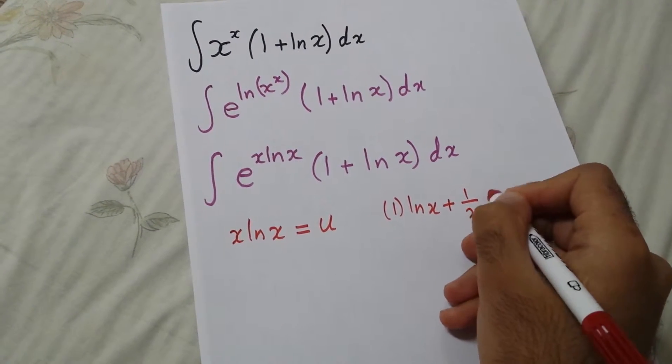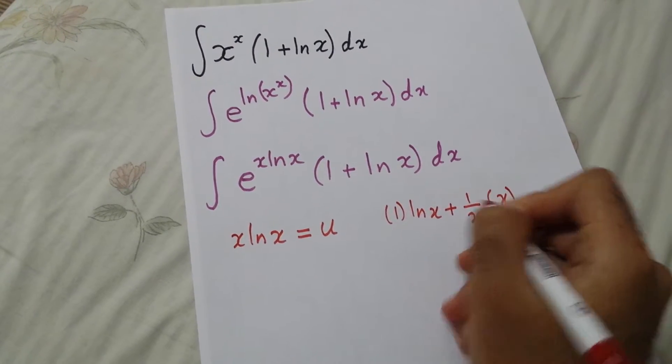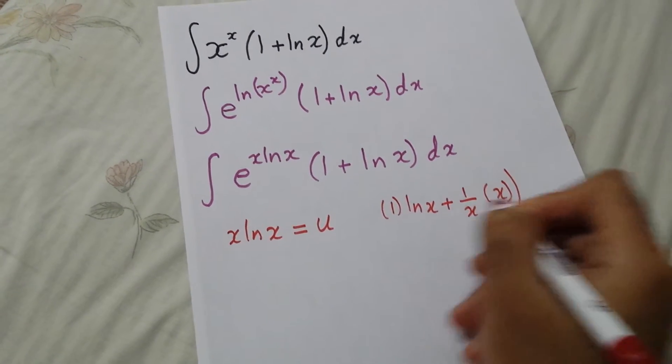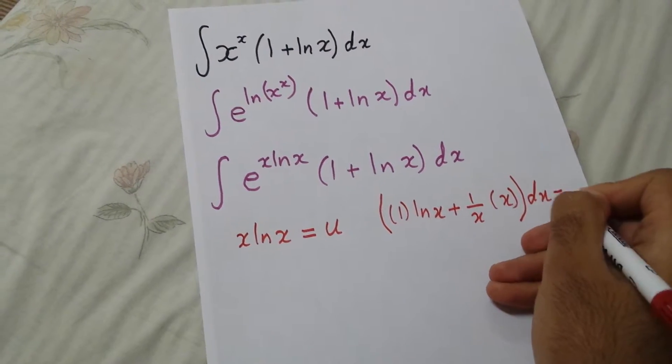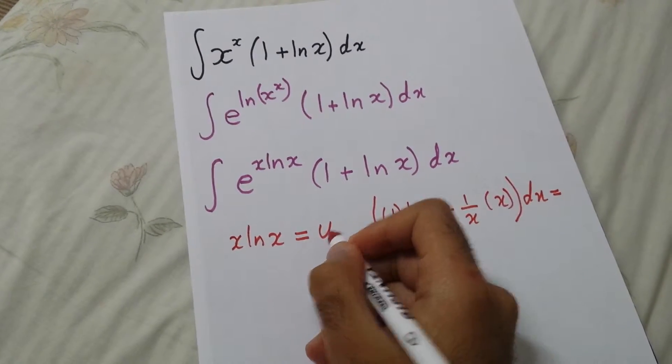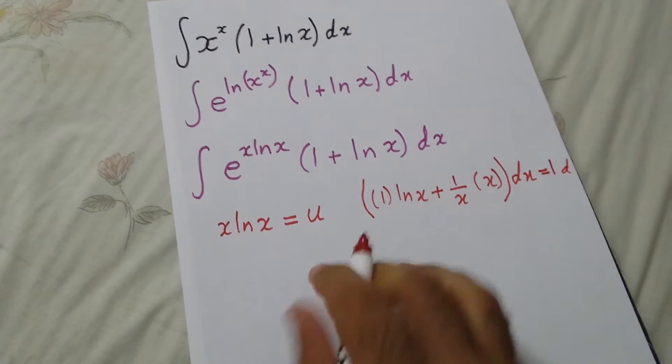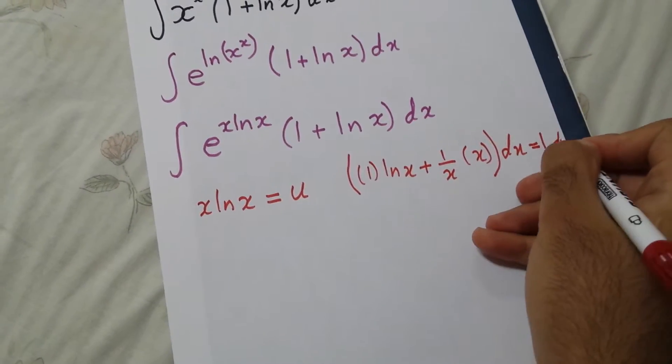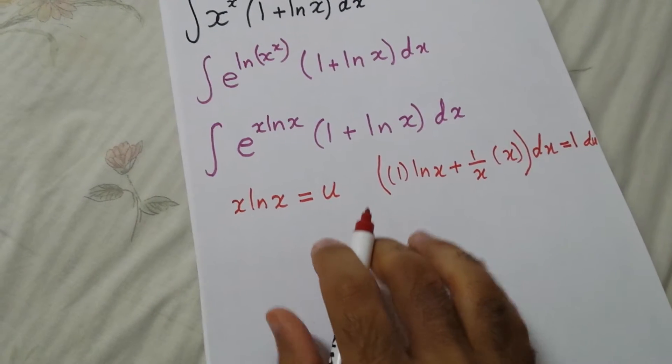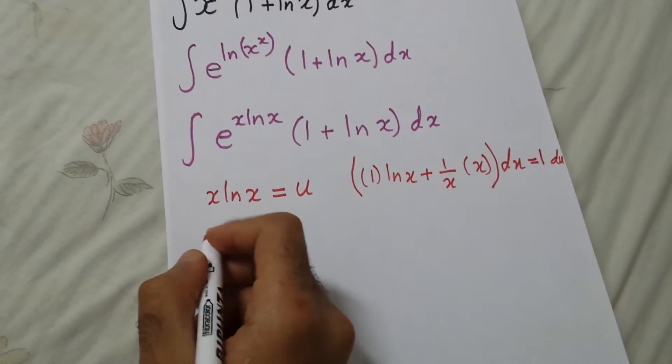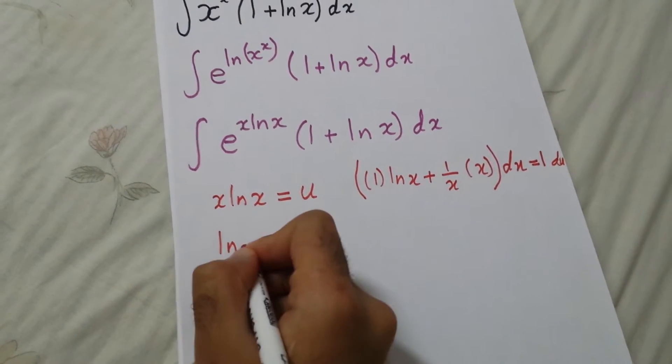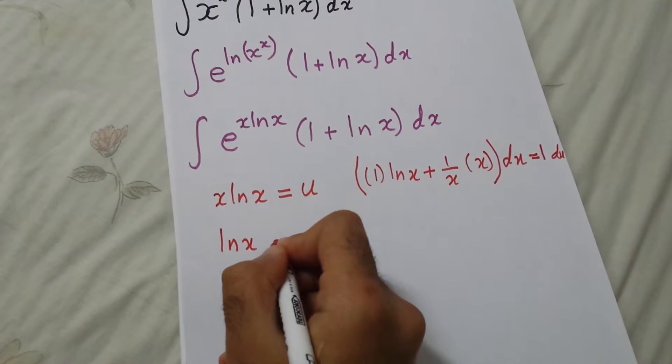Now simplify: it will be ln x plus x over x times 1 times dx equals du.